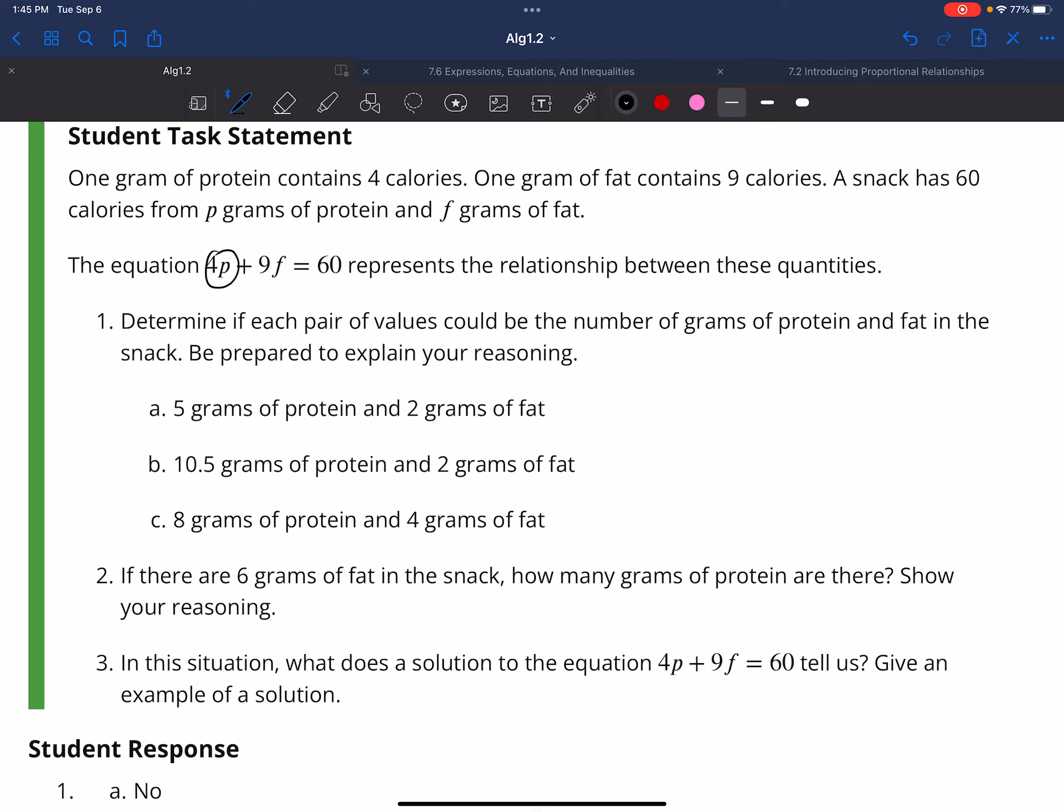So I'm going to just write this down. So 4 calories per 1 gram of protein, and this is 9 calories per 1 gram of fat. So that's what that's saying.